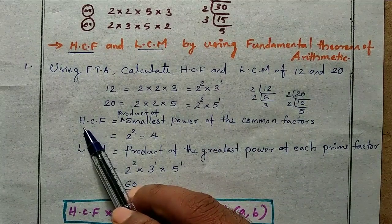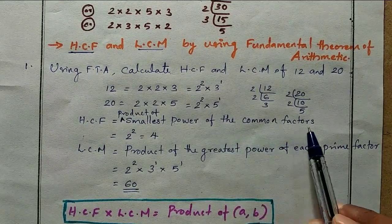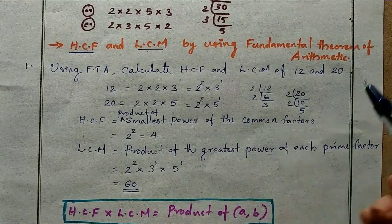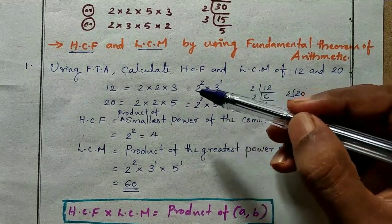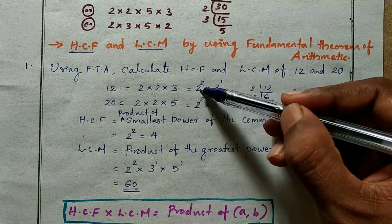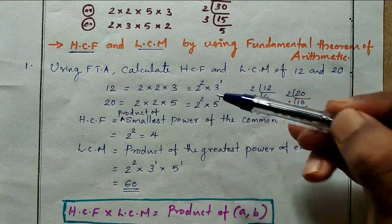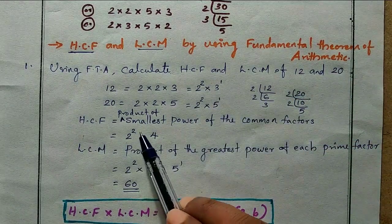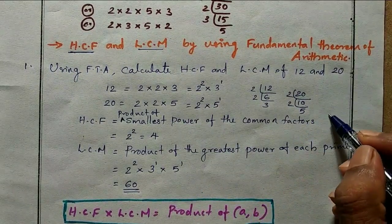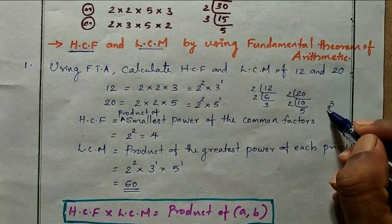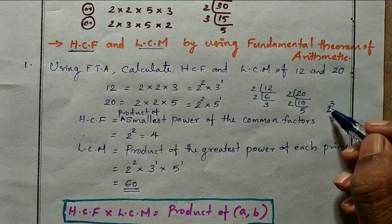To find HCF, we take the product of the smallest power of the common factors. What are the common factors? 3 is not common, 5 is not common, but 2 is common. In 12 we have 2², and in 20 we also have 2², so the smallest power of the common factor 2 is 2² = 4. Therefore, HCF = 4.